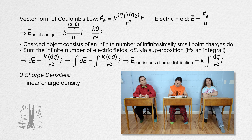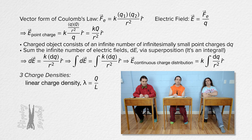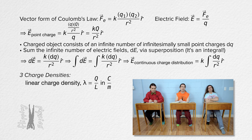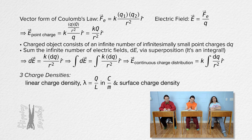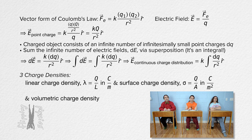Linear charge density, or lowercase lambda, equals charge divided by length, so it's in units of Coulombs per meter. And volumetric charge density, or lowercase rho, equals charge divided by volume, and its units are Coulombs per meter cubed.